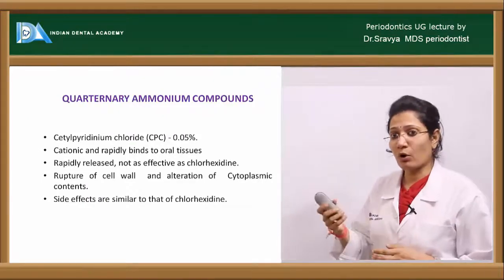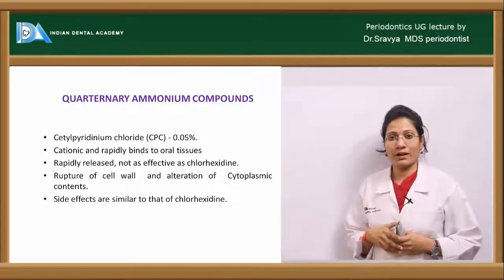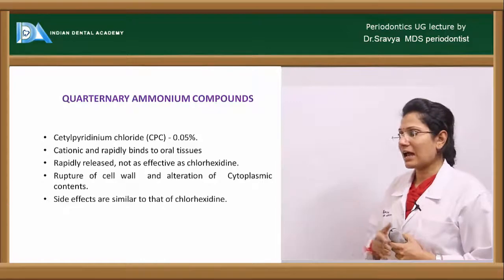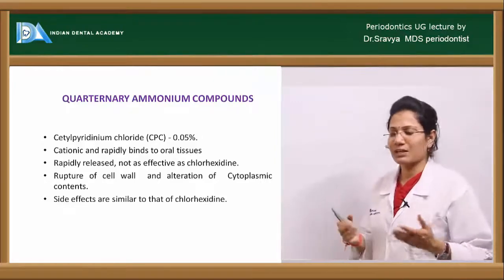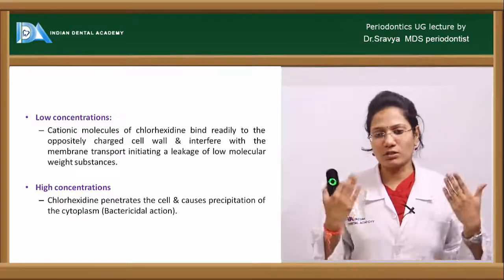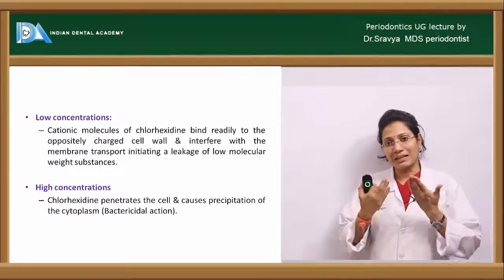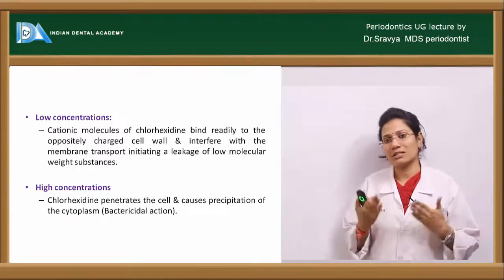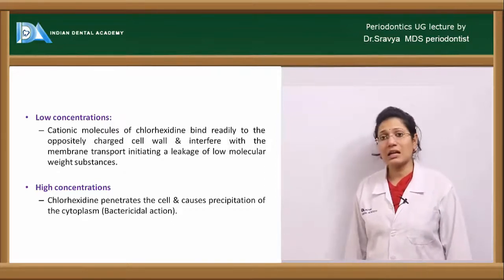Quaternary ammonium compounds include cetylpyridinium chloride (CPC) at 0.05%. It is a cationic molecule that rapidly binds to oral tissues, is rapidly released, and ruptures the cell wall with alteration of cytoplasmic contents. Side effects are similar to chlorhexidine: metallic stains, rare hypersensitivity rashes, and increased calculus formation. Chlorhexidine mouthwash is considered the gold standard but should not be used for too long a period as it can cause taste alteration, staining, and increased calculus formation.